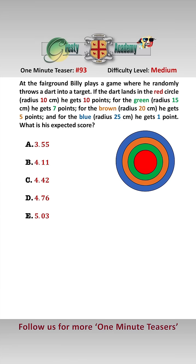So to solve this we need to work out the areas of the colours. Now first of all the area of the whole target is pi times 25 squared which is 625 pi.